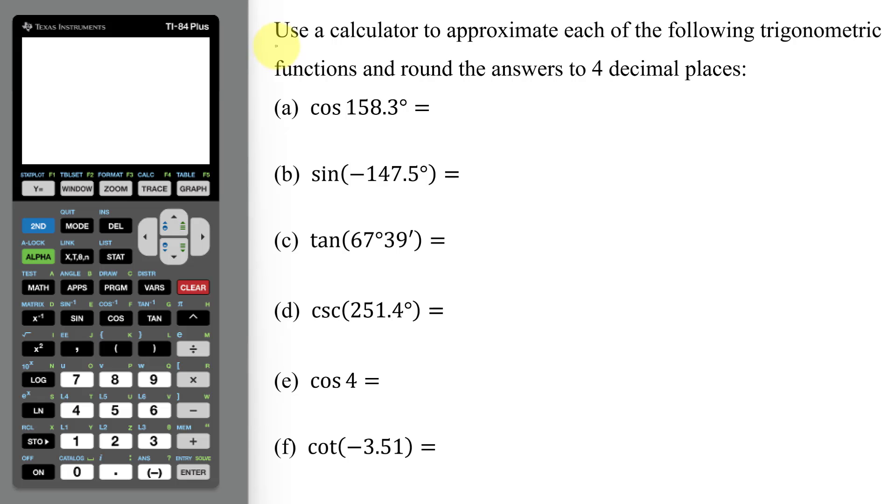In this example, I need to use a calculator to approximate each of the following trigonometric functions and round the answers to four decimal places. Notice I'm using a TI-84 plus calculator.